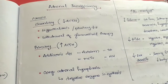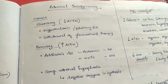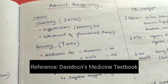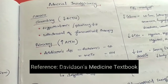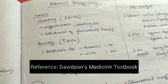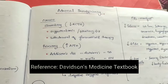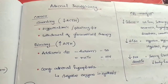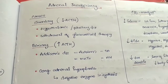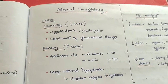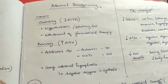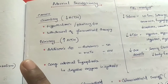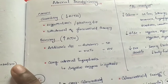Hello friends. We have an interesting topic about the endocrine system. This is a short note about adrenal insufficiency — when the adrenal gland doesn't produce its hormones. What are the reasons? I am using Davidson's table and a short note about it.